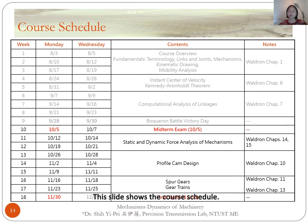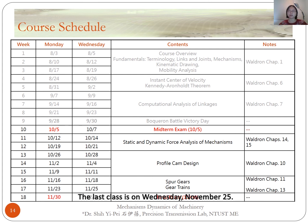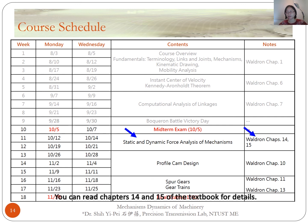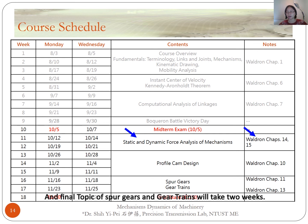This slide shows the course schedule. The second part of this course starts on Wednesday, October 7, and the last class is on Wednesday, November 25. The final exam is on Monday, November 13, organized by TA Sebastian. The topic of static and dynamic force analysis will take two weeks — you can read chapters 14 and 15 of the textbook for details. Cam profile design will take three weeks, and the final topics of spur gears and gear trains will take two weeks.